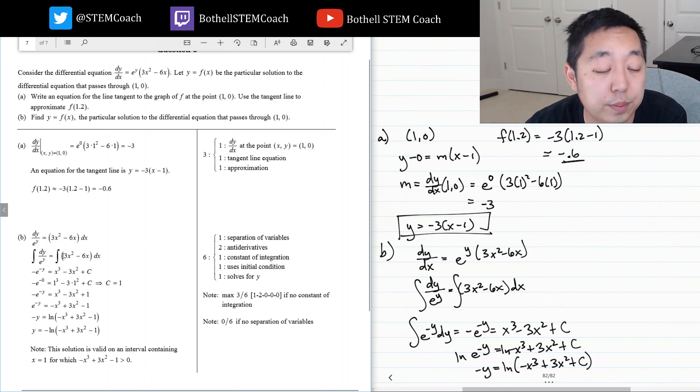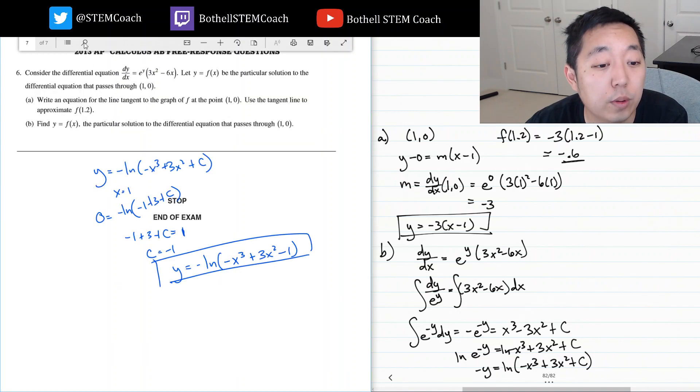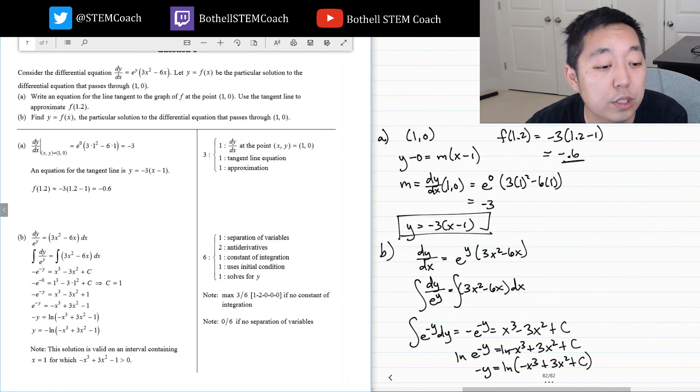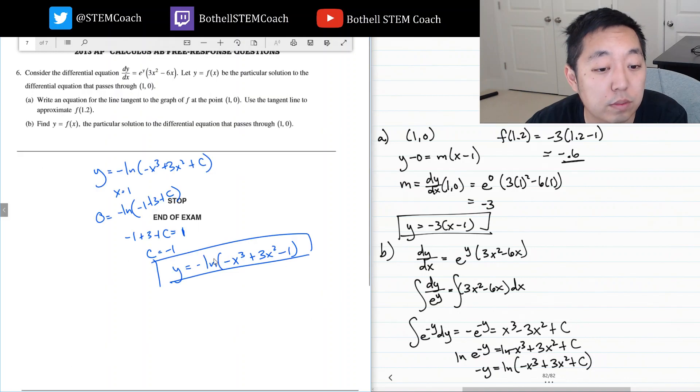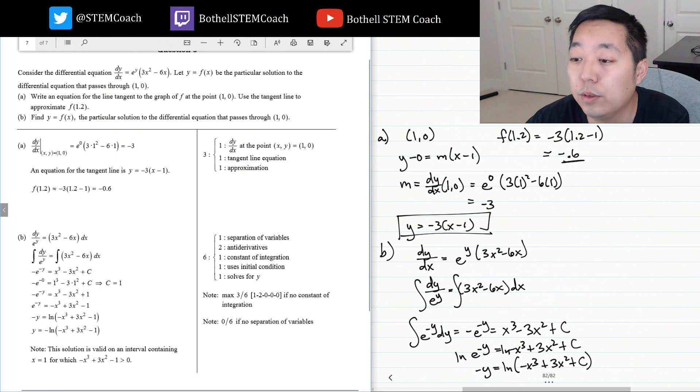Yeah, what did they want? They wanted the particular solution. They're saying note the inner valid interval, but negative ln negative x cubed plus 3x squared minus one. Okay, minus one. All right, so that wraps up the 2013 free response. I hope that was helpful.